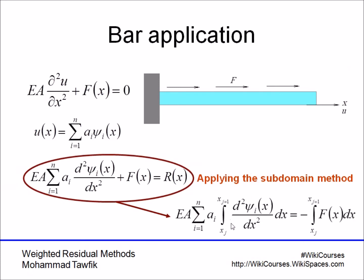Applying the subdomain now will give us integration of each of the second derivative, each of those derivatives, from some point xj to some point xj plus 1. And now actually, xj and xj plus 1 can be the two boundaries, and you use only a single subdomain. In that case, you will have a single series solution.